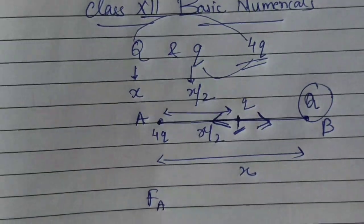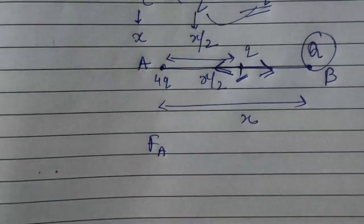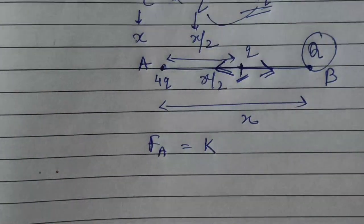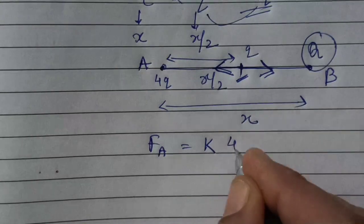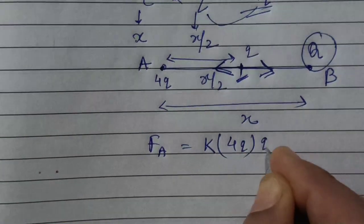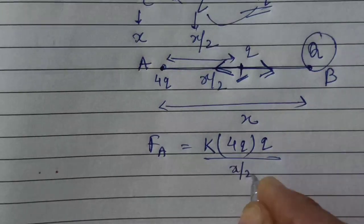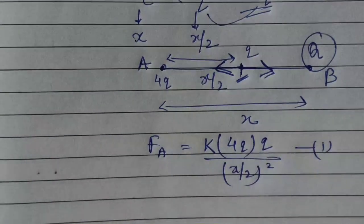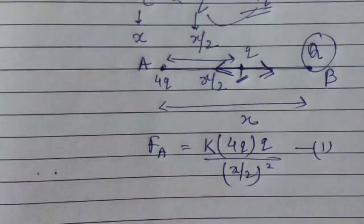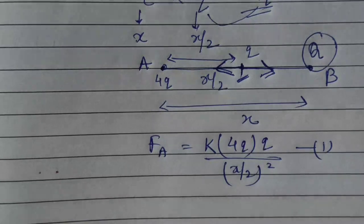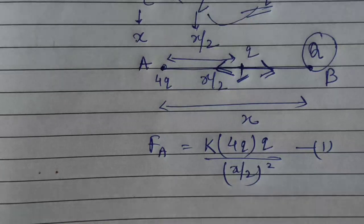So FA, the force between A and q: its formula is 1 by 4πε₀ — first charge is 4q, second charge is q, and the distance between them is x. So FA = k·4q·q / x². This force will be repulsive, going outward in the opposite direction.